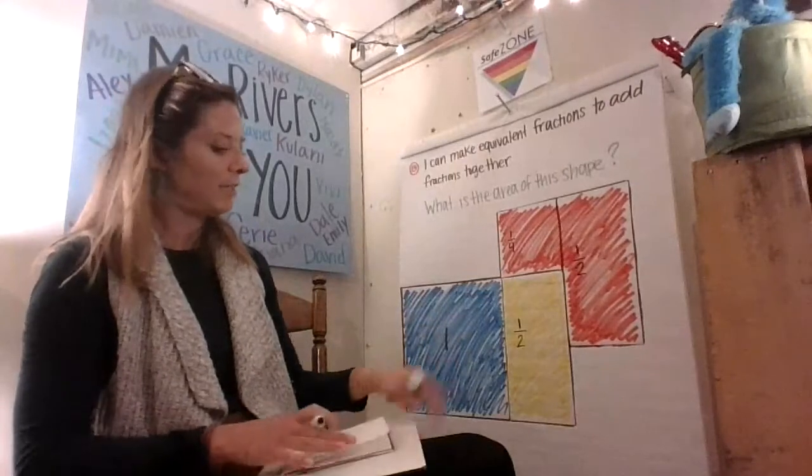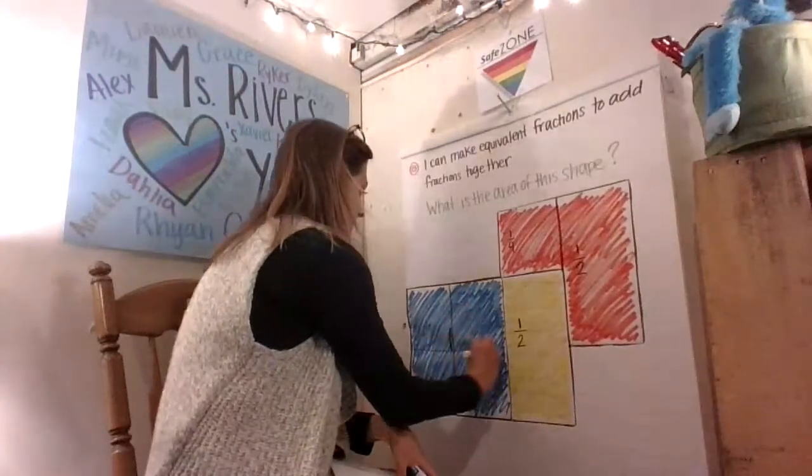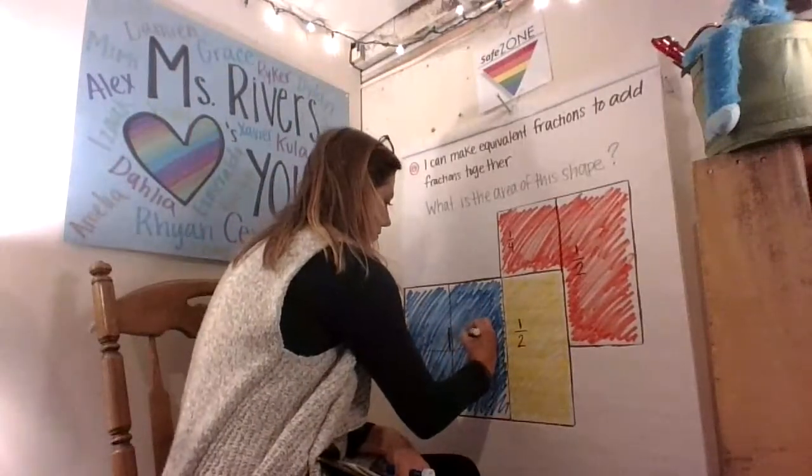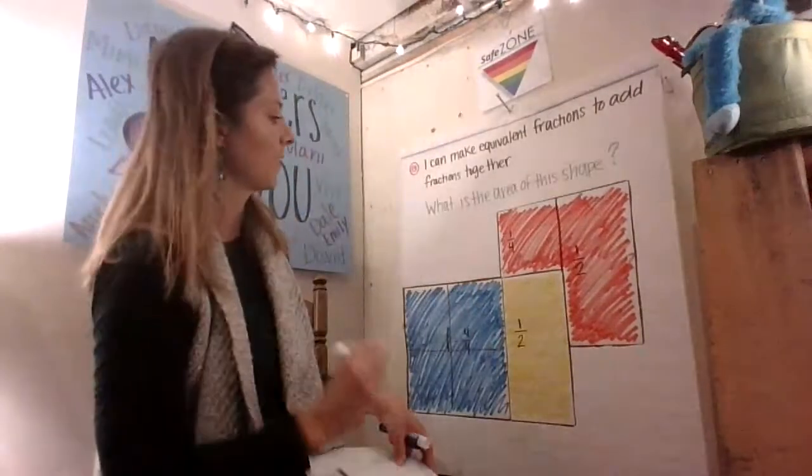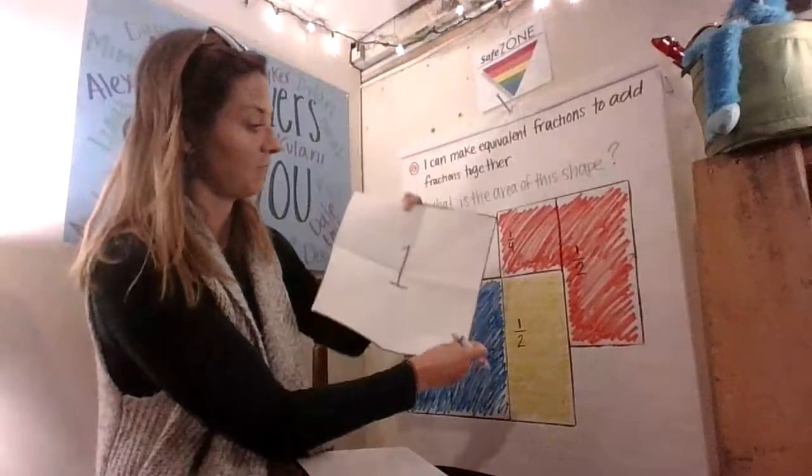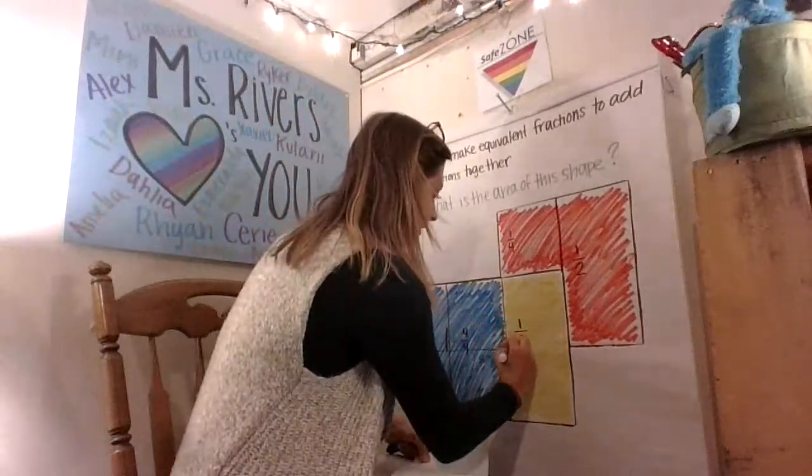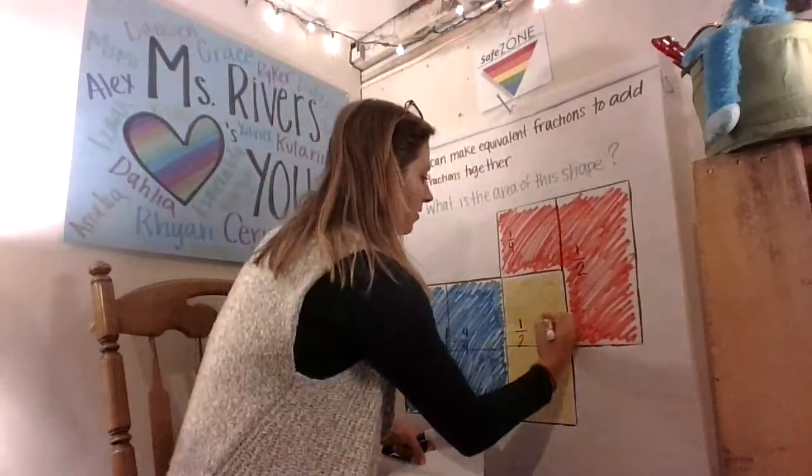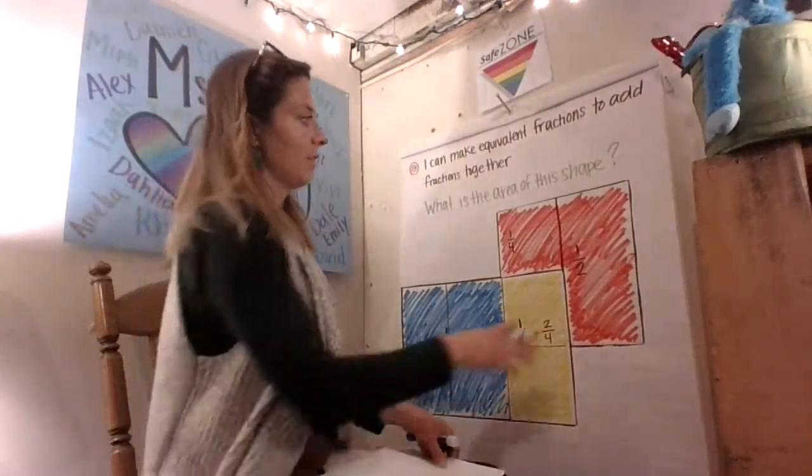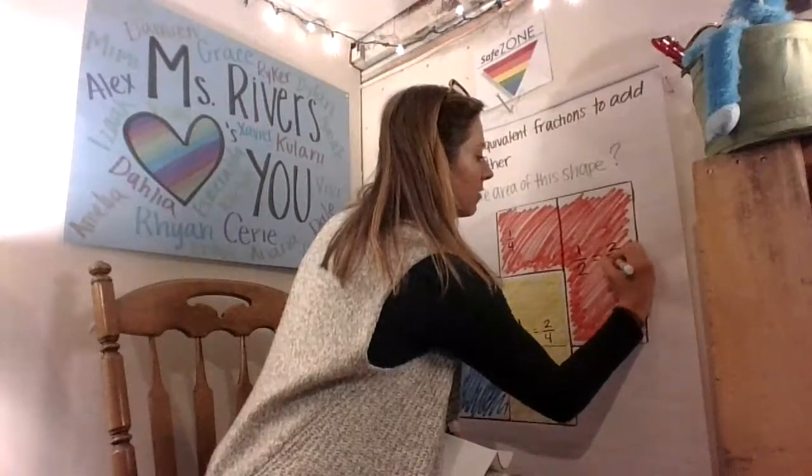So I know that a whole is equal to one, two, three, four fourths. So I can say four fourths. I know that a half of this whole is equal to two fourths, that that is equal to two fourths. I also know that since this half is equal to two fourths, this half is also equal to two fourths.